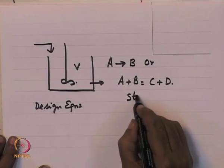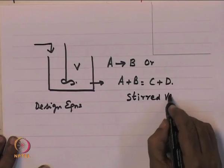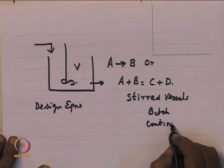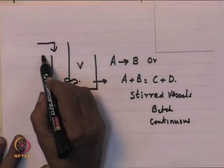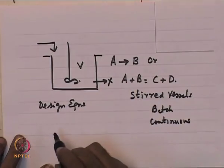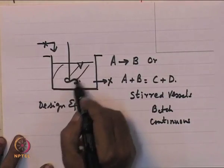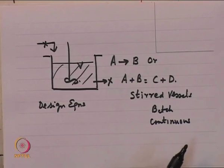Stirred vessels can be batch equipment or continuous equipment. Batch equipment means there is mixing inside but no flow in or out — you start with a certain amount of fluid, process it for a certain length of time, and set up equations to describe what is going on inside. There is no inflow and no outflow, so whatever happens in the reaction is accounted for by the reaction kinetics responsible for that reaction.